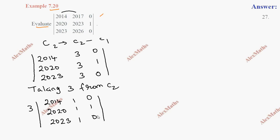So if you have a value of the product, now expanding along column 3 — expanding along C3.